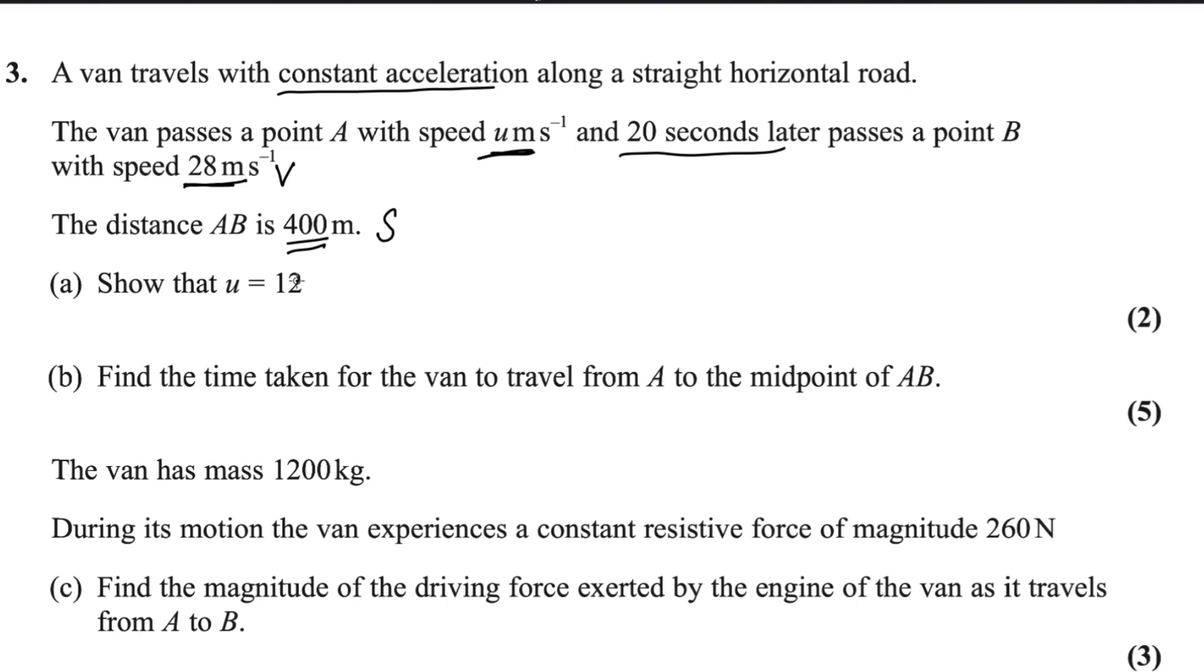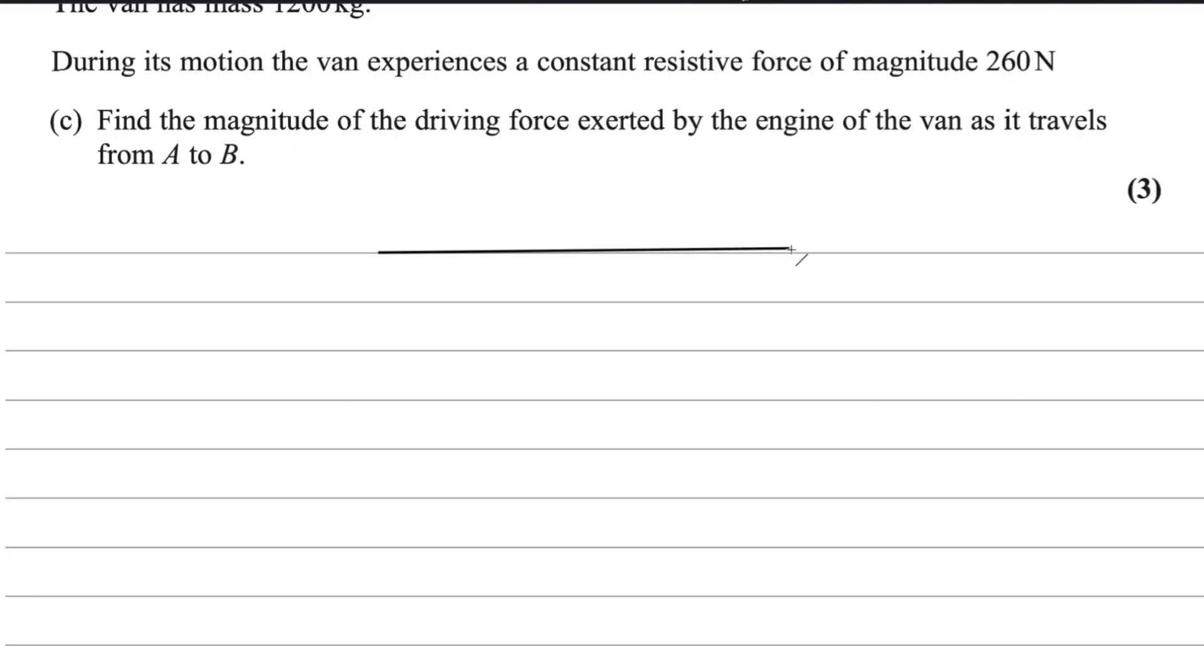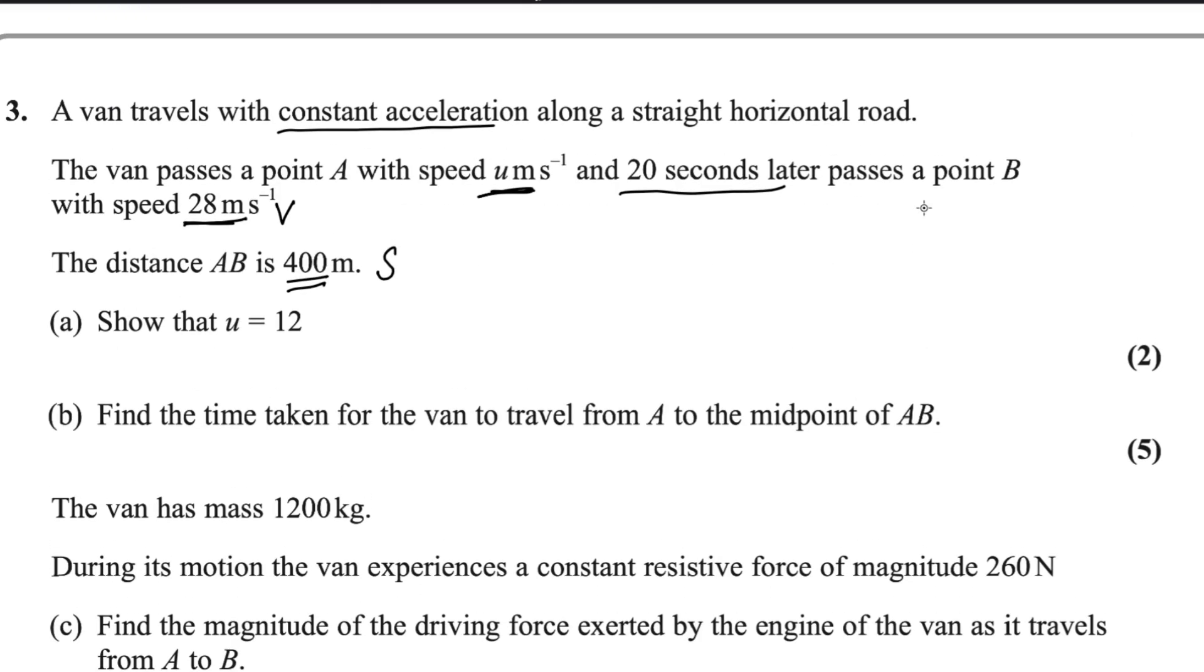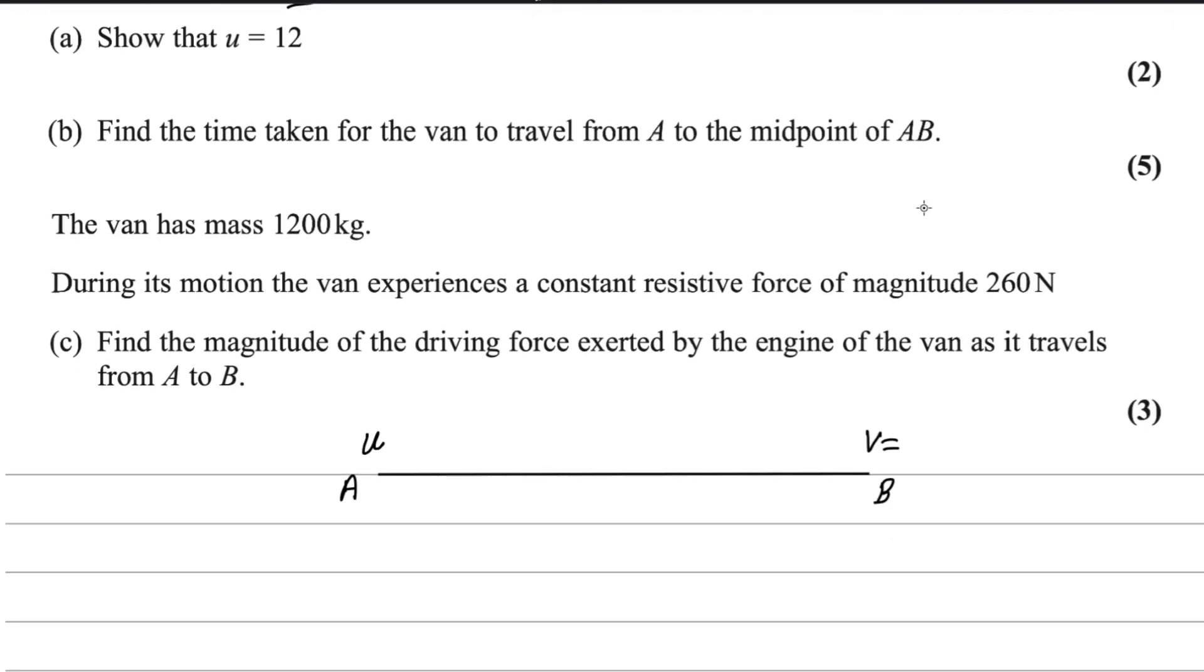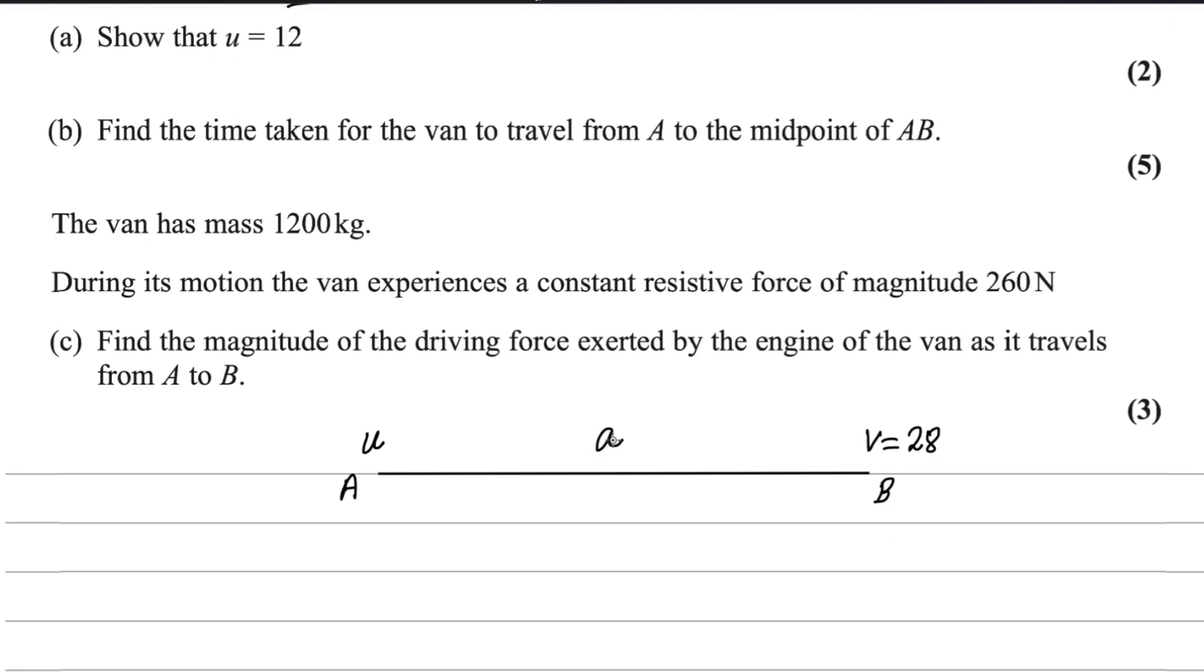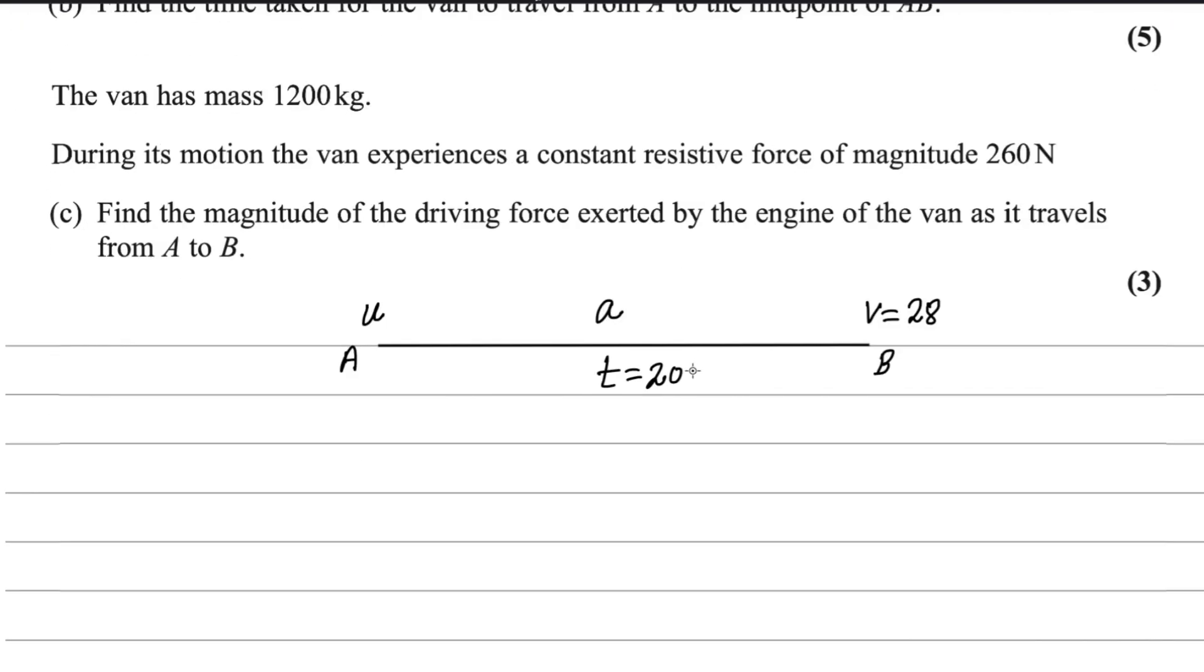Let's use this information on a straight line because the van is traveling on a straight line. We can use A and B with initial speed u and final speed at point B that is 28 meters per second. Acceleration is a, time taken is 20 seconds, and distance is 400 meters.